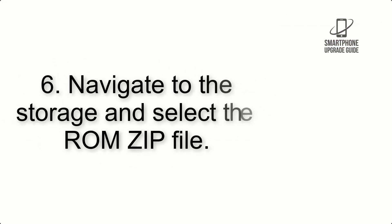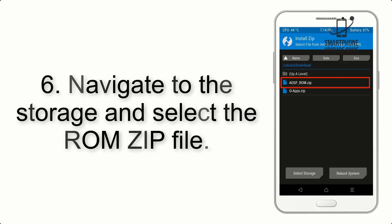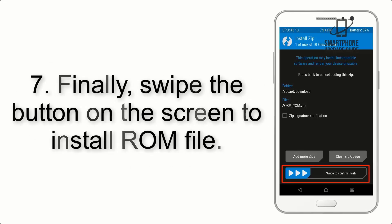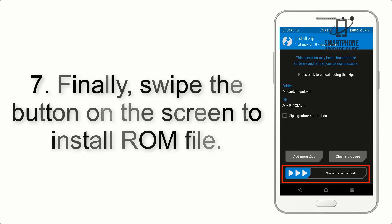Step 6: Navigate to the storage and select the ROM ZIP file. Step 7: Finally, swipe the button on the screen to install the ROM file.